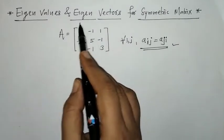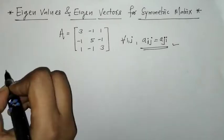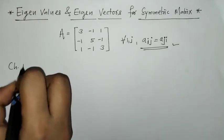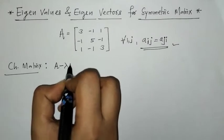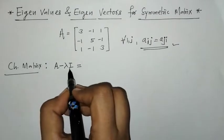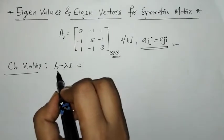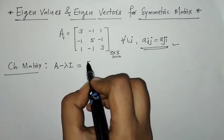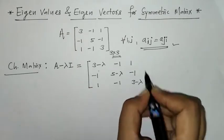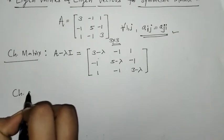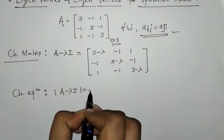Now we have to find eigenvalues and eigenvectors for this matrix. For this we need the characteristic equation, and for this we have to find the characteristic matrix. This matrix is given by A minus lambda I, where lambda is a scalar and I is the identity matrix of order 3. So we have to find this A minus lambda I matrix. The characteristic equation is given by the determinant of A minus lambda I equals 0.